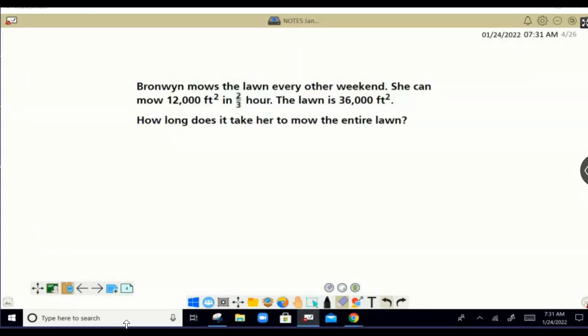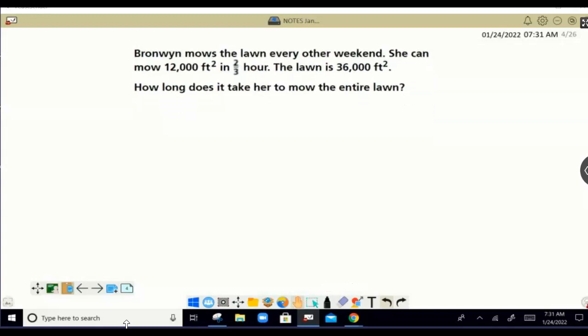We might have to think about it a little bit. So here's an example with Bronwyn, who mows the lawn every other weekend. She can mow 12,000 square feet in two-thirds of an hour, and she's looking at another lawn. Let's just stop at that point and say, you know what?